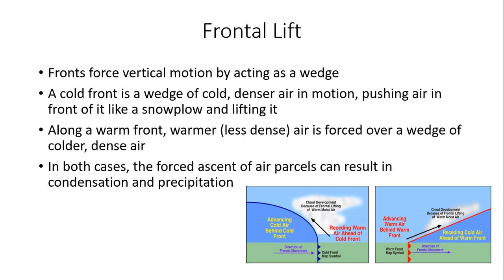Along a warm front, we get a similar effect where warmer, less dense air is forced up over a wedge of colder, denser air at the surface. Any type of front is generally an area of low-level convergence causing air to rise. The forced ascent of air parcels can result in condensation — the formation of clouds and precipitation. The cold front acts almost like a bulldozer, while a warm front produces more stratiform or stratus clouds with a gradual slope and lifting mechanism.